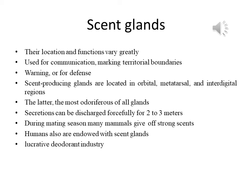Scent-producing glands are located in the orbital, metatarsal and inter-digital regions, behind the eyes, on the cheek, base of the tail, back of the head, and anal region. The anal glands, the most odoriferous of all, open by ducts into the anus and their secretions can be discharged forcefully for 2 to 3 meters. During mating season, many mammals give off strong scent for attracting the opposite sex.